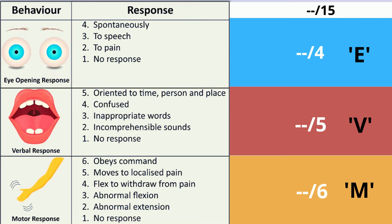If there is spontaneous eye opening with a positive corneal reflex, it scores four out of four. If eye opening occurs on sound or verbal command, it is a score of three. When eye opening occurs only on pressure or pain stimulus, it is two. If there is complete absence of eye opening, it is one. It is often documented as capital letter E — for example, E3.